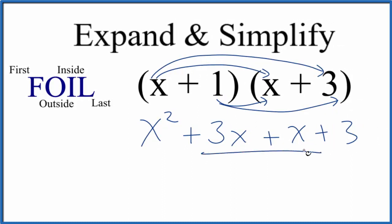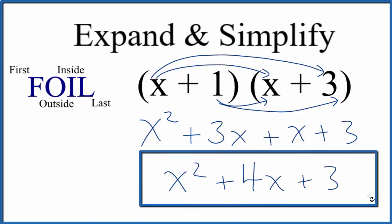We can combine the 3x and the x, that'll give us 4x, and we end up with x squared plus 4x plus 3. So this is the expanded and simplified form of x plus 1 times x plus 3.